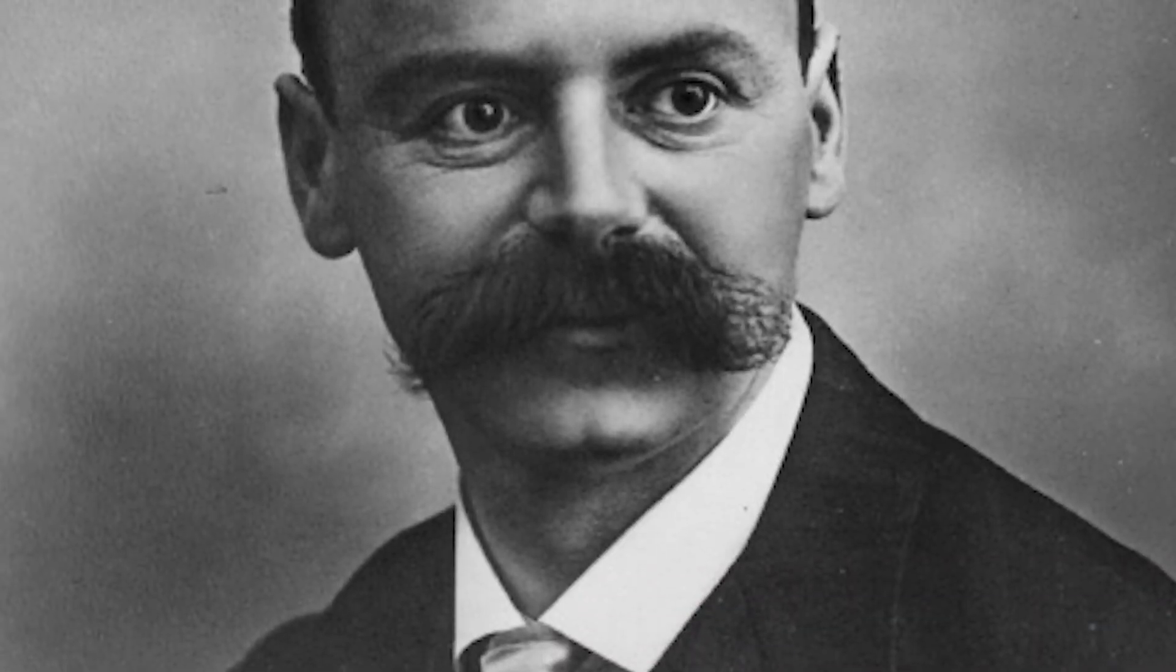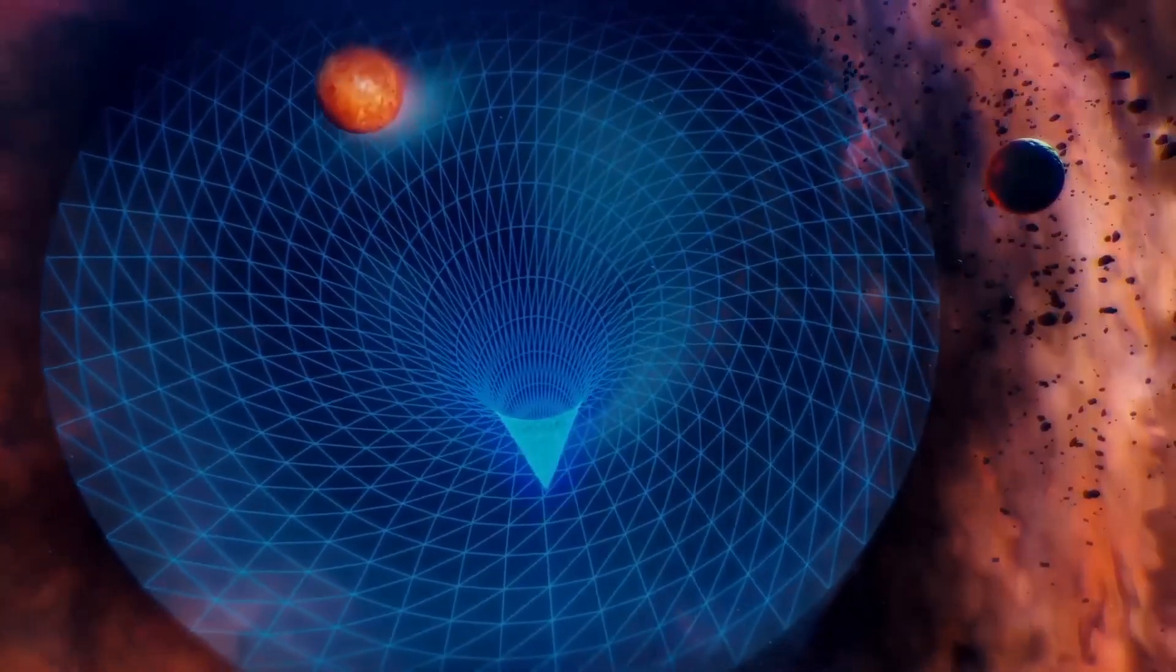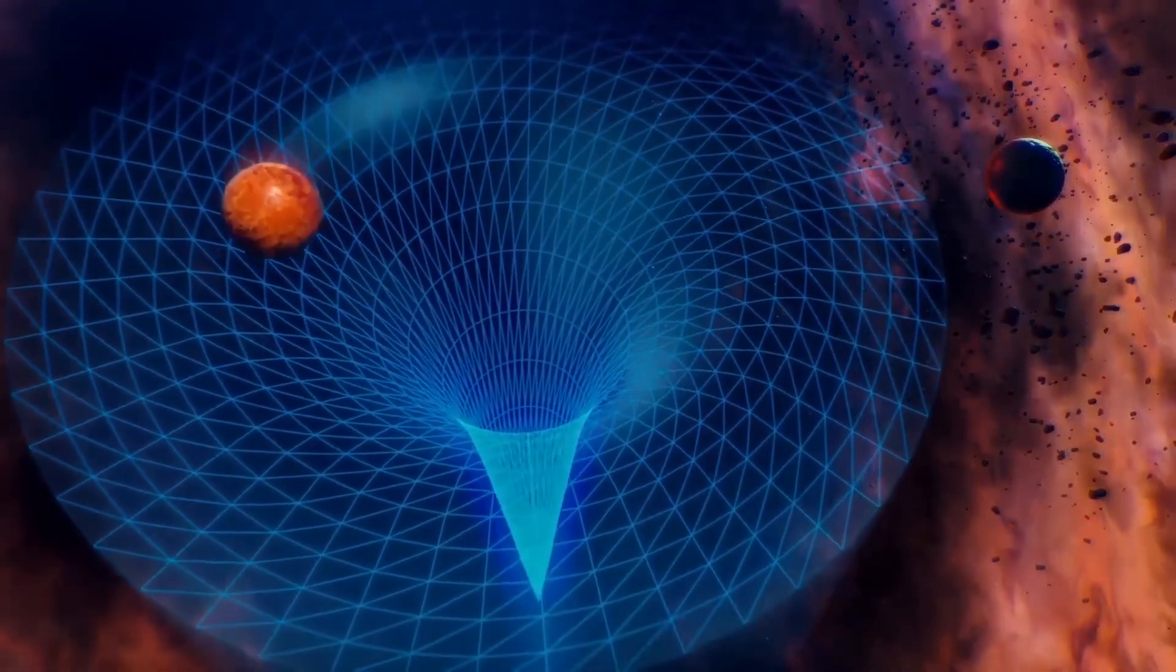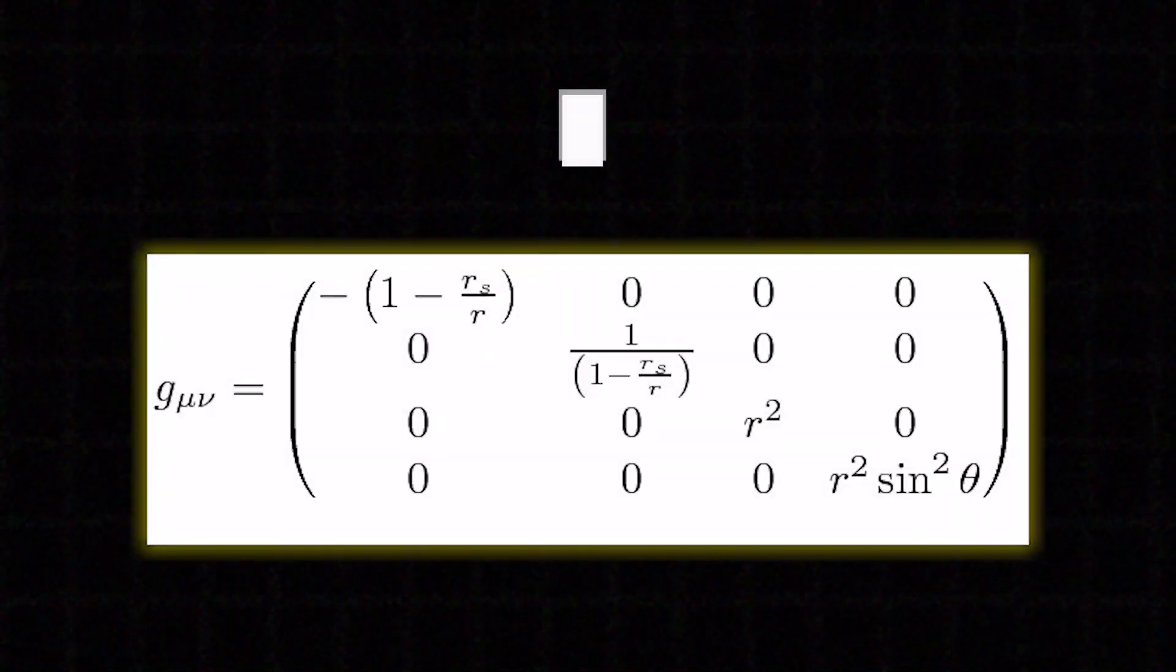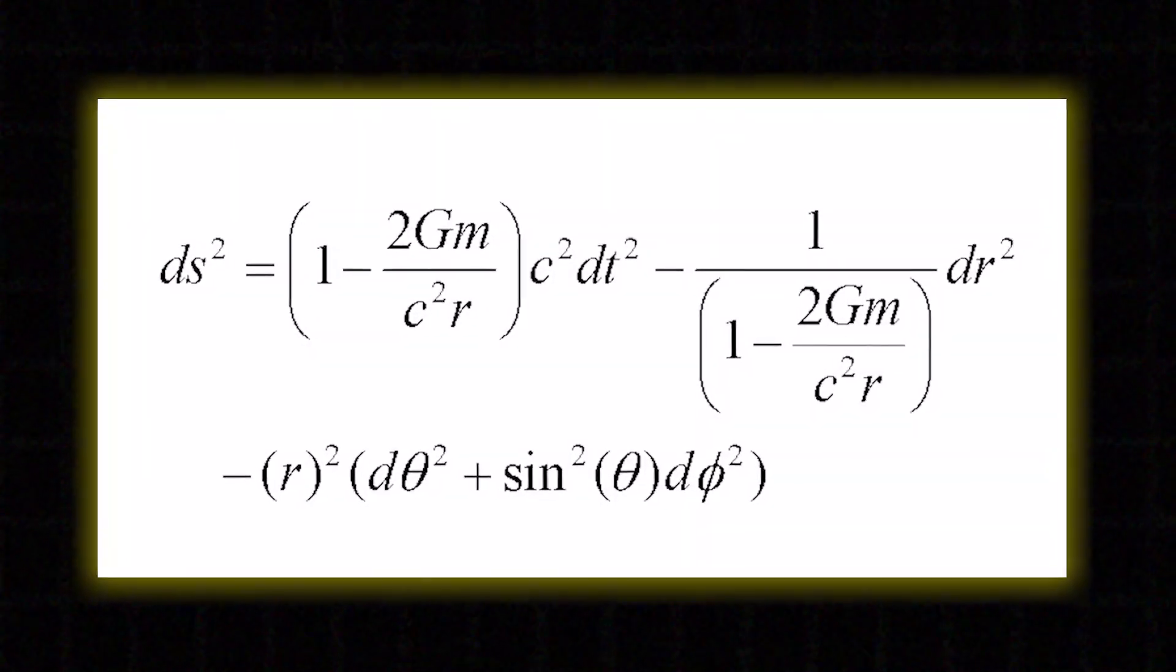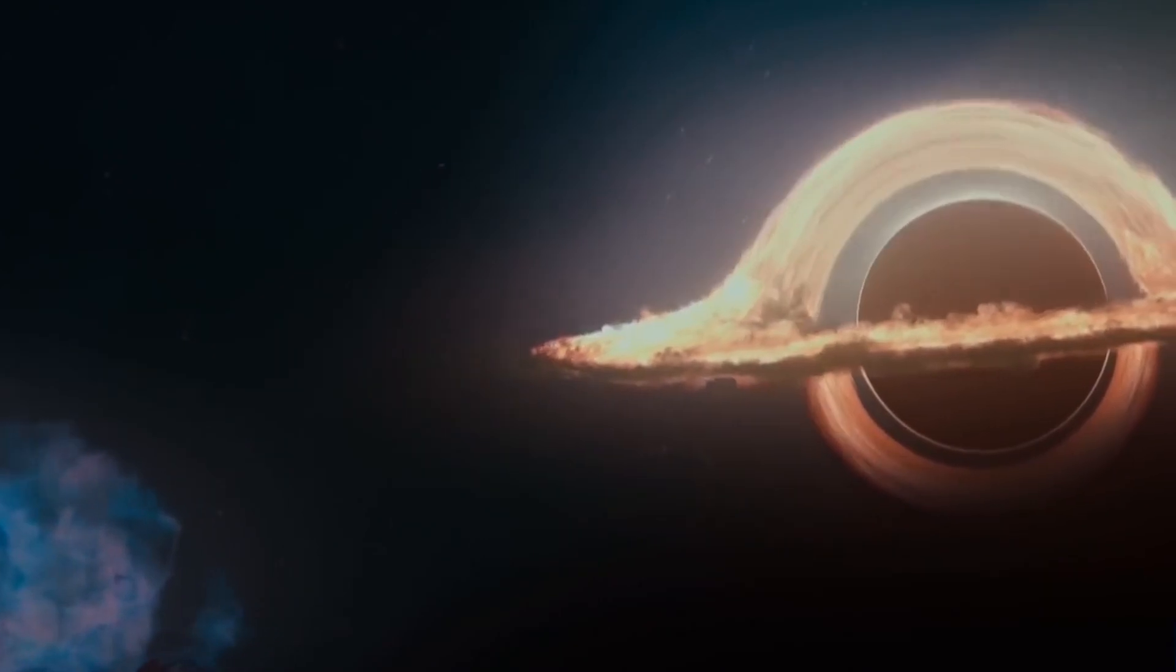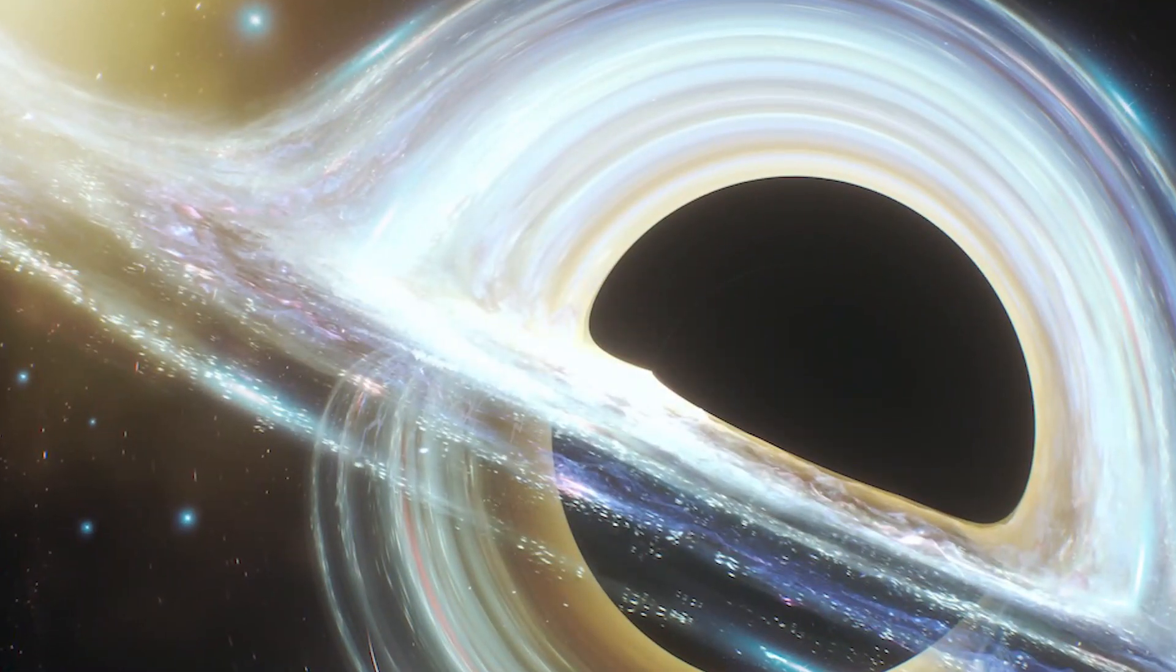Carl Schwarzschild took Einstein's field equations further and used them to solve the equation of mass in empty space-time or an area completely void of all matter. This resulted in the Schwarzschild metric. The equation itself is in fact very complex, but it's simply a mathematical representation of a black hole. However, the black hole in Schwarzschild's equation is the type without charge or change and is known as an eternal black hole.